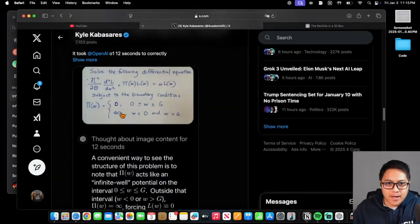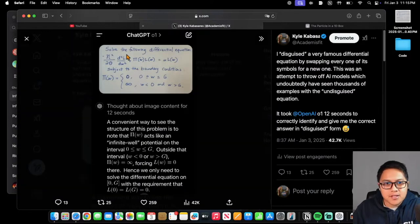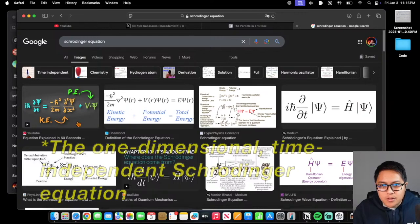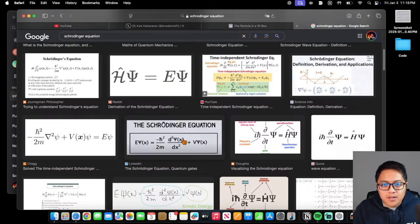I posted this on Twitter, or X, but more or less what I did was that I created this modified Schrödinger equation. And the Schrödinger equation, of course, is a very famous equation in quantum physics. The Schrödinger equation has a form that looks something like this, right?